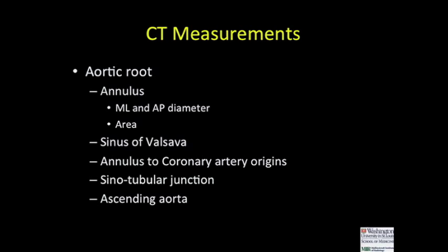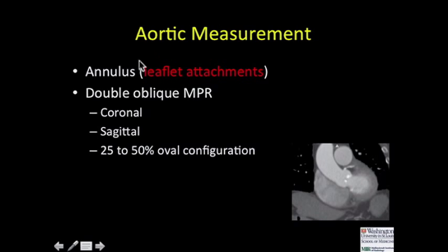The measurements that help our cardiology colleagues — first and foremost, we spend a fair amount of time looking at the aortic annulus, doing a medial-to-lateral and AP diameter as well as area of the annulus, measuring the sinus of Valsalva. They really need to know the distance from the annulus to the coronary artery origins for device positioning, as well as looking at the aortic configuration. If it's very tortuous or dilated, they may not be able to navigate from a femoral approach.